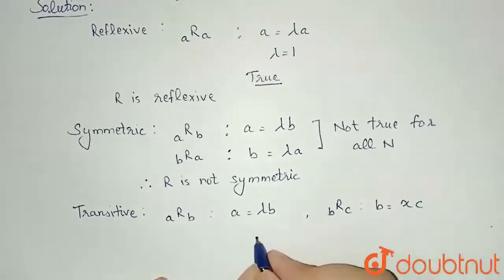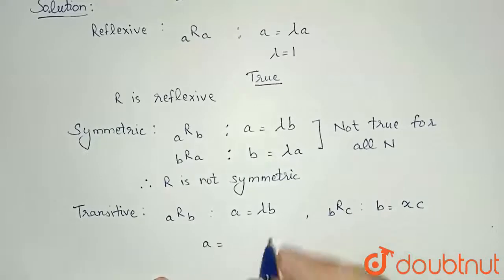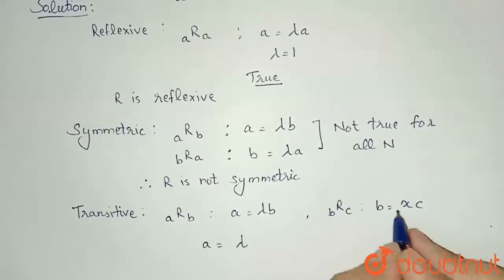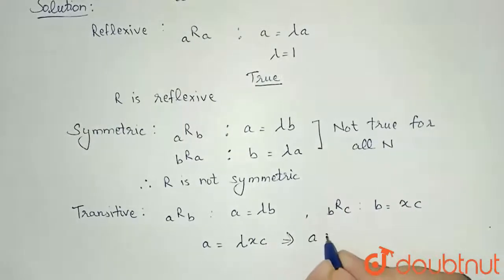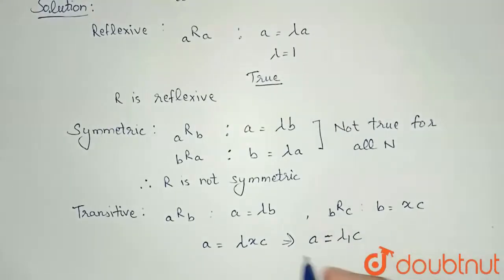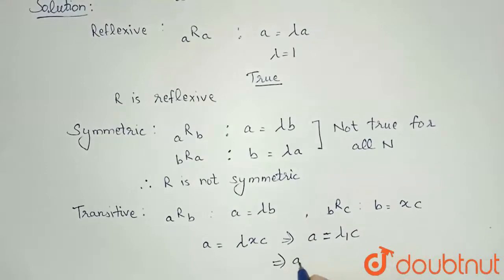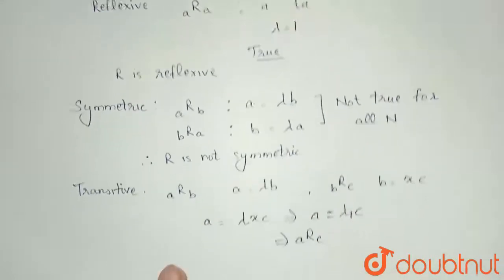Now from these two, I can write a equals lambda, and instead of b I can write x times c, and I can give this lambda x some new name. Suppose I am giving it lambda 1, so a equals lambda 1 times c. So by this I can write that my element a is related to my element c.